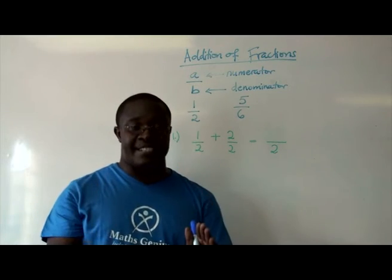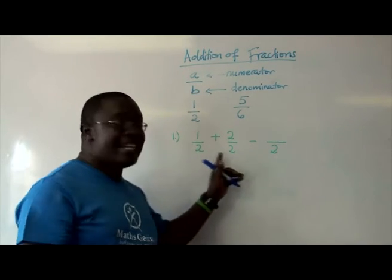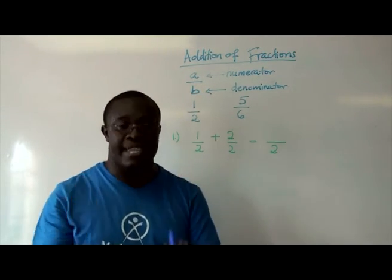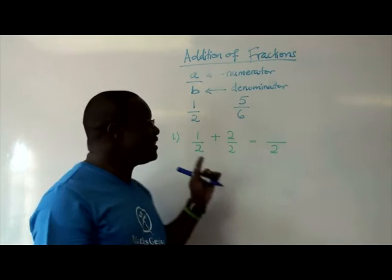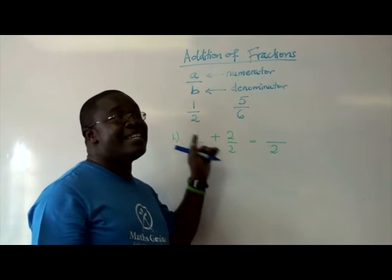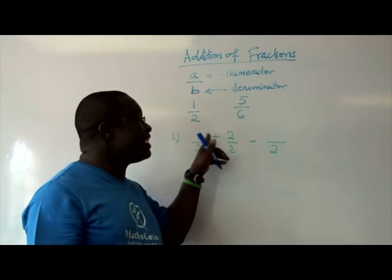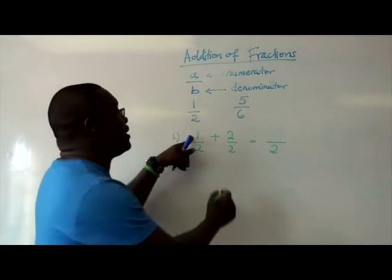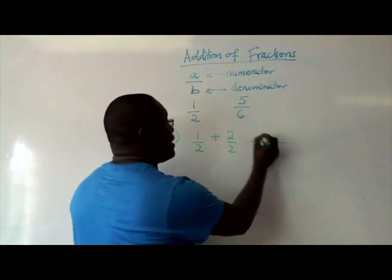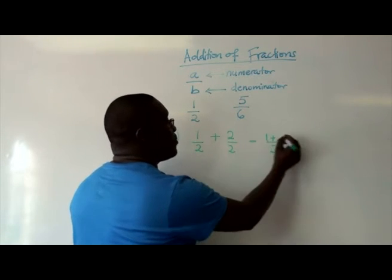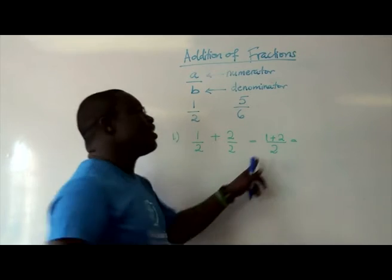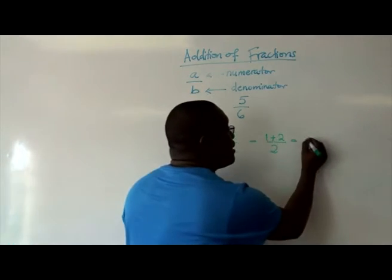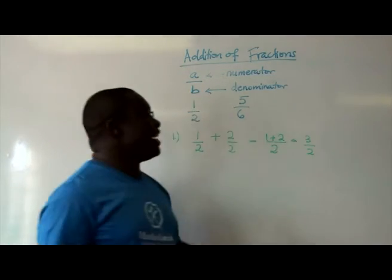To add fractions, the denominators have to be the same. And if they're the same, then it's just a case of adding the numerators. In this case, it would be 1 plus 2, which is 3 over 2. That's your sum.